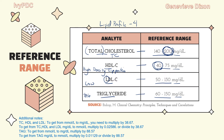If we want to convert them to the SI unit, which is the international standard for measurement, we use millimole per liter. That means we have to divide these values by a certain number. For total cholesterol, HDL, and LDL, we divide them by 38.67, while triglyceride values in milligrams per deciliter are divided by 88.57.